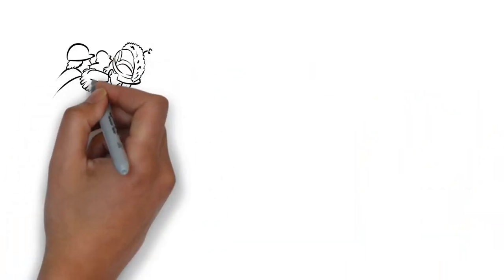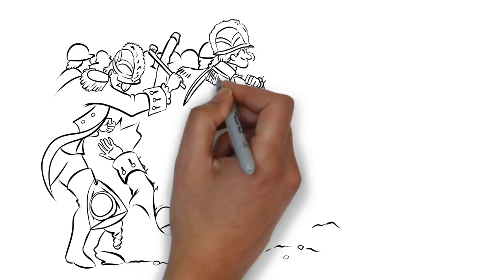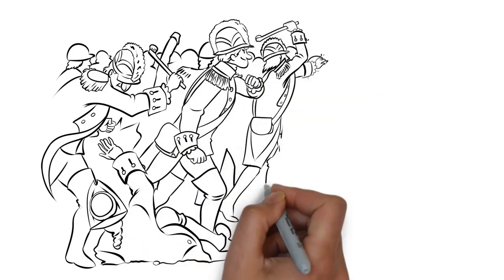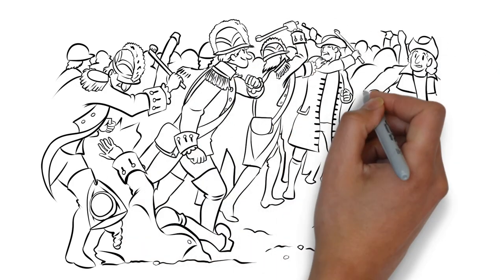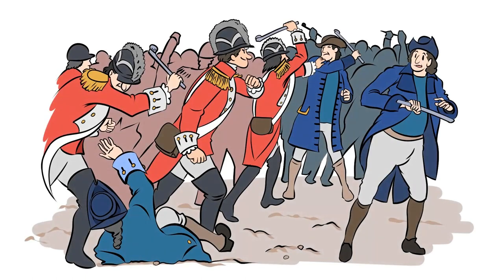Boston was like the business owner who refused to be extorted. So Britain used its military to make an example of the city. Occupying soldiers killed civilians, forced their way into private homes, and blocked commerce.